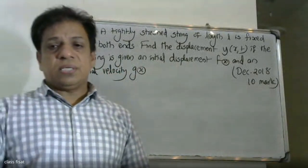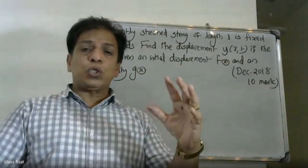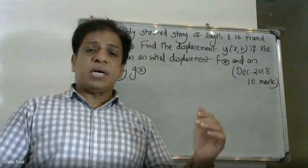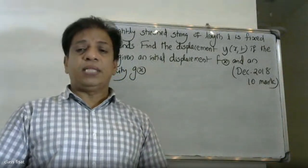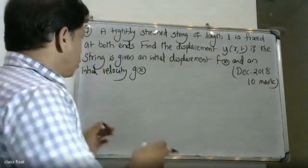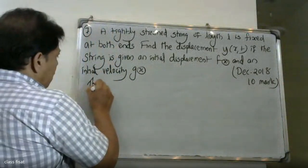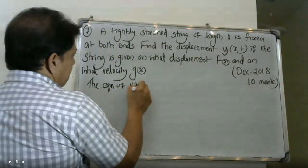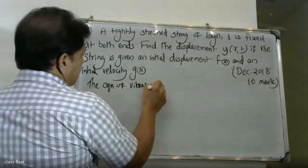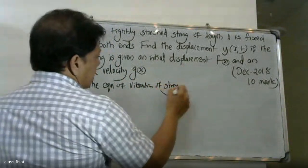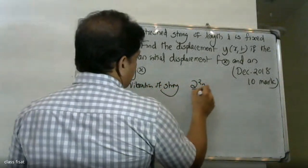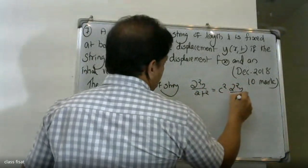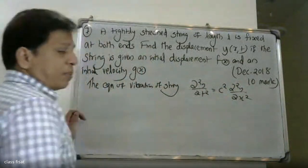The vibration of a string is the most suitable occasion. The boundary condition will be applied step by step. This is the equation of vibration of the string: the partial derivative d²Y/dt² is equal to c² times d²Y/dx² — that is the equation of vibration of the string.